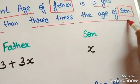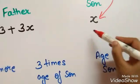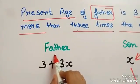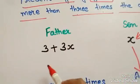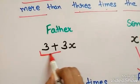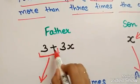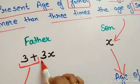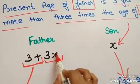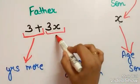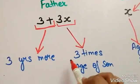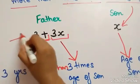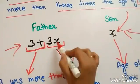Suppose the age of the son is x. The present age of father is 3 years more than 3 times the age of the son — that is, 3 plus 3x. So here we get the ages of father and son.